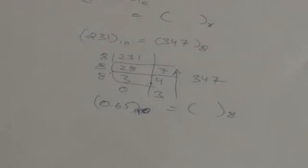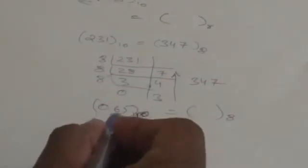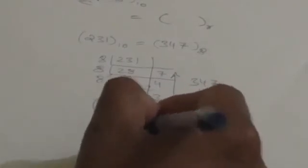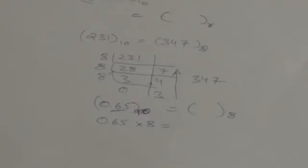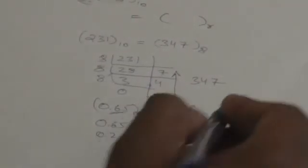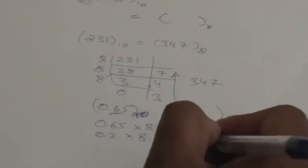The fractional part 0.65 must be multiplied by 8. When we multiply 0.65 by 8 we get 5.2, so the integer part is 5 and the fractional part is 0.2. Now again multiply the fractional part 0.2 by base 8 — we get 1.6, so here the integer part is 1 and the fractional part is 0.6.